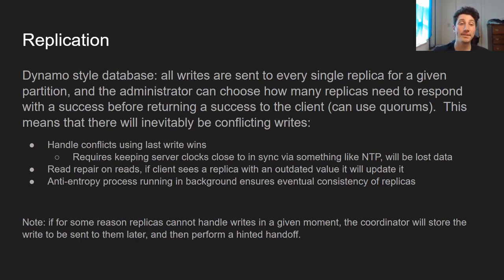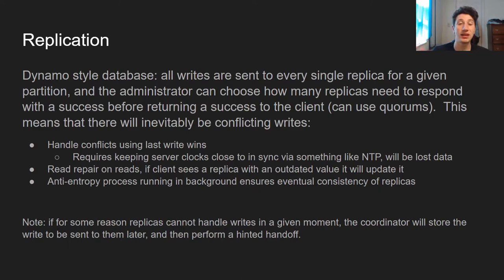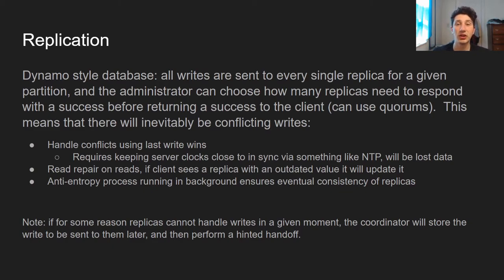Last write wins means that based on the higher timestamp, whichever was the more recent write is the one that is kept. However, the issue is that clocks are not reliable in distributed systems — servers are inherently a little out of sync. Cassandra doesn't really have a great answer to this. All they basically say is keep your servers as close to proper time as possible via NTP, the Network Time Protocol. Certain writes might just be lost if you update a key and someone else updates it a millisecond later. There's no merge handling or anything like that.